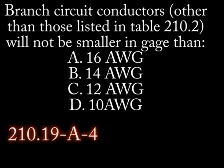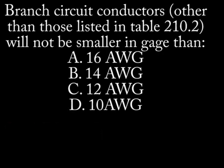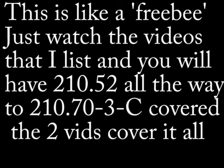Number 8. Branch circuit conductors, other than those listed in Table 210-2, will not be smaller in gauge than: A. 16 AWG. B. 14 AWG. C. 12 AWG. D. 10 AWG.